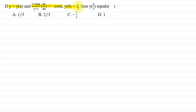where y(0) = 1, then y(π/2) equals: option A is 1/3, option B is 2/3, option C is -1/3, and option D is 1.